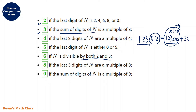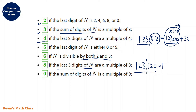The divisibility rule of eight is that the last three digits of n are a multiple of eight. This is similar to four. So for a big number like 123120, we just look at the last three digits. 120 is divisible by eight, so this whole number is divisible by eight. The reason is the same — it can be written as 123000 plus 120, and the first part is always divisible by eight, so we only worry about the last three digits.